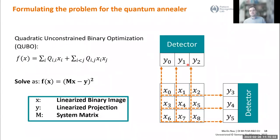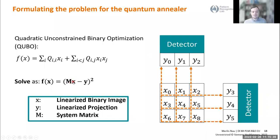When we formulate this problem for the quantum annealer, we know the annealer is good at solving Quadratic Unconstrained Binary Optimization problems — so-called QUBOs. These consist of binary qubits x with linear interaction terms and quadratic coupling interactions between two qubits. Looking at our equation f(x), where M is the system matrix, x is our linearized binary image, and y is our linearized projection, this expression has at most quadratic interactions. So it can be translated to a QUBO — which Rogers and Singleton also showed in their paper.